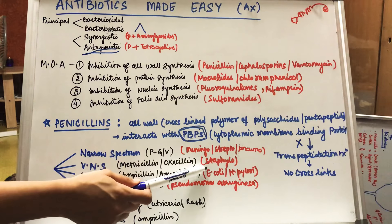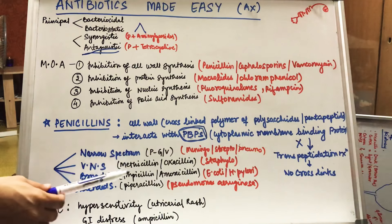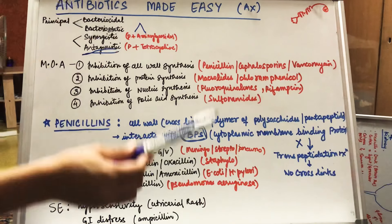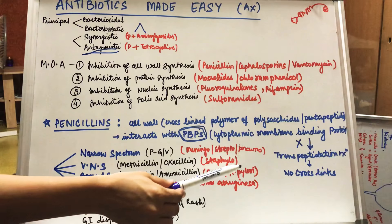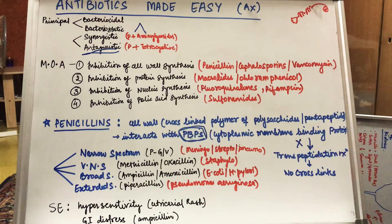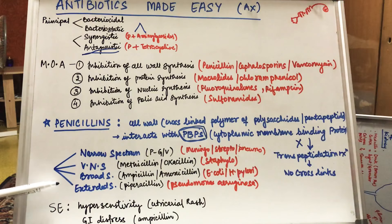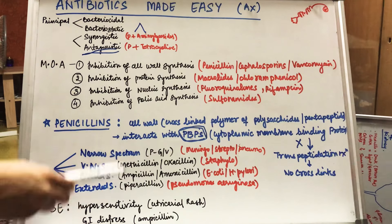Very narrow spectrum drugs such as methicillin and oxacillin work against staphylococcus. In broad spectrum, drugs such as ampicillin and amoxicillin, both starting from A, work against E. coli and H. pylori. When there is gastric ulcer or gastritis, we give ampicillin and amoxicillin.